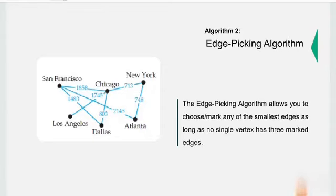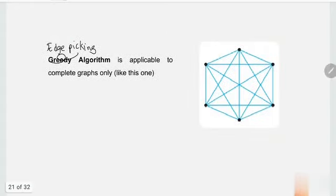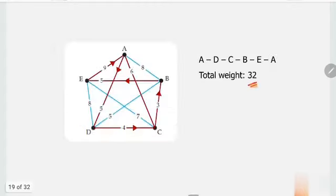Okay, so the next algorithm is Edge Picking Algorithm. In this one, it allows you to choose or mark any of the smallest edges as long as no single vertex has three marked edges. In the greedy algorithm, we have a sort of system - for example, to start at A, and then if this one is the smallest, which is this one, this one is the smallest, which is this one, and so on.